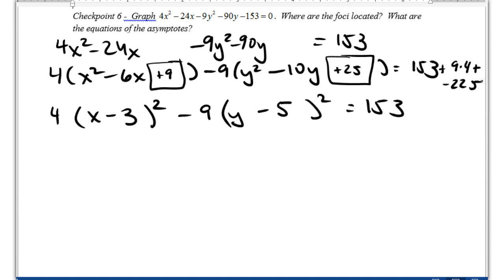Okay, and now I've got 153 plus 36 minus 225, which is negative 36 on this side. And on this side, I have my perfect squares, 4 times x minus 3 squared minus 9 times y minus 5 squared equals negative 36.